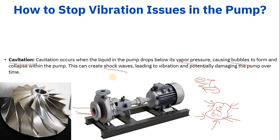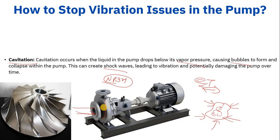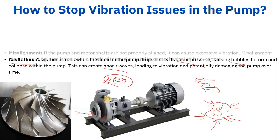To avoid cavitation, when we size the pump we ensure the NPSHA and NPSHR are properly accounted for. We also operate the pump above the vapor pressure, and we always perform priming to ensure there is no air locking.